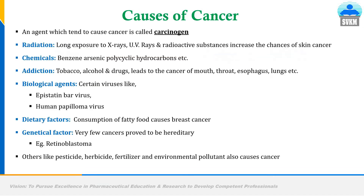Let's try to understand the causes of cancer — how uncontrolled cell division and cell proliferation occurs and the reasons behind it. There are many causes of cancer. 80 to 90% of cancers are said to originate from environmental factors. The agent which tends to cause cancer is called a carcinogen. That carcinogen may be chemicals or addictions — any material that can cause a normal cell to develop the ability for uncontrolled cell growth and division.